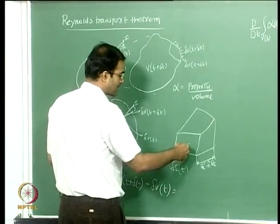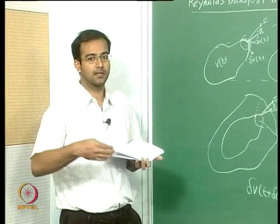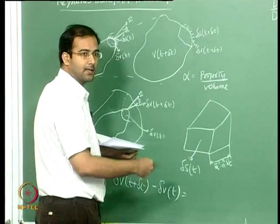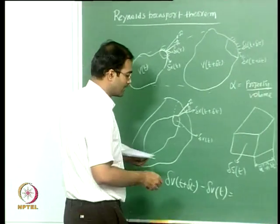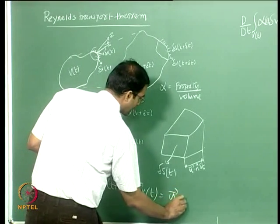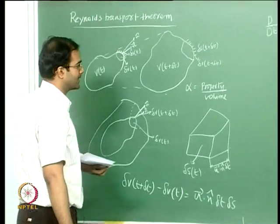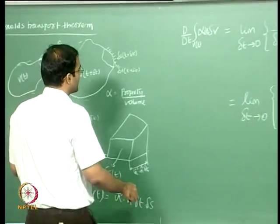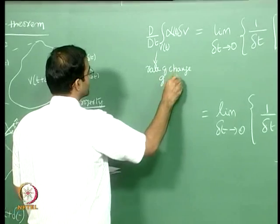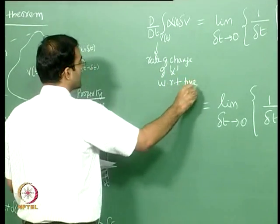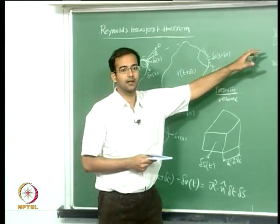If the surface is sweeping a distance of u vector dotted with the normal, that displacement is happening to the differential surface element at time T. This change in the differential volume equals u dot n times delta T times delta S. This is how we represent the change in volume. From the Eulerian point of view, the rate of change of this property for the control mass — since mass does not change — is just tracking property change with respect to time, which is a total derivative.